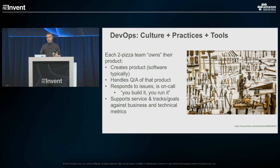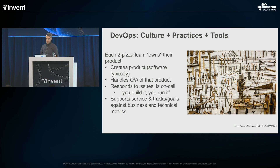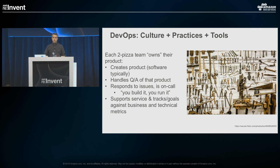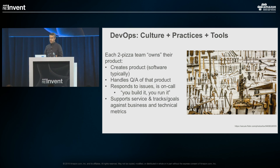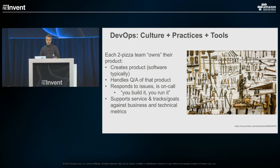DevOps is made up of three things: cultural philosophy, practices, and tools. From a culture perspective with two-pizza teams, each team owns their product — they create it, handle all QA, respond to on-call issues (developers are part of a pager rotation), and they support the business of that product, tracking both business and technical metrics.